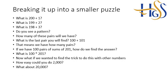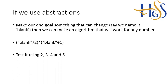Now, what if you wanted to find the trick to do this with other numbers? How would you go about it? How easy could you do 2000, for example? And as I said, once you've got the hang of this, you could go on to 20,000. What stays the same? What is different? Have a look at the patterns. And it's a really good trick to do, party trick to do, that will wow people that you tell it to. Because you can ask them and go, well, I know the answer to that. They will look at you differently. If we use abstractions, we make our end goal something that can change. Say we name it blank, then we can make an algorithm that will work for any number. Blank divided by 2 times blank plus 1. Test it. Test it on different numbers. See if it works.